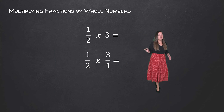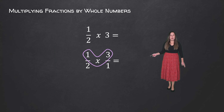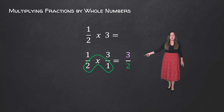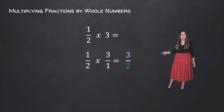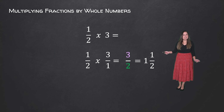Writing 3 over 1 is the same thing as 3. For multiplying fractions, it doesn't matter if the denominator is the same or different — we just go ahead and multiply the numerators: 1 times 3 is equal to 3, then multiply the denominators: 2 times 1 is equal to 2. Here we have an improper fraction, so we rewrite it as a mixed number: 3 over 2 is equal to 1 and 1 over 2.